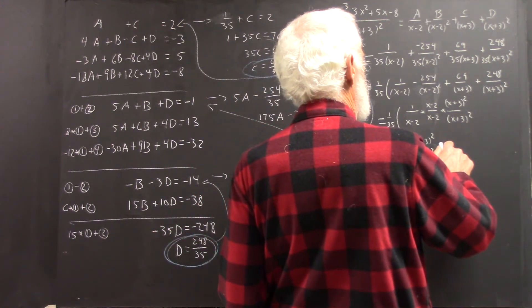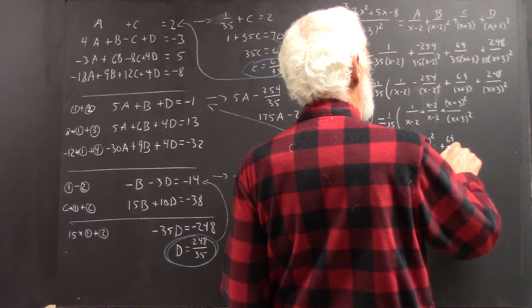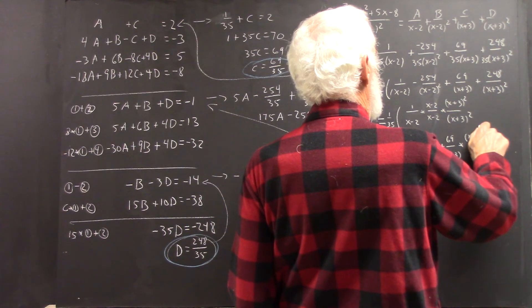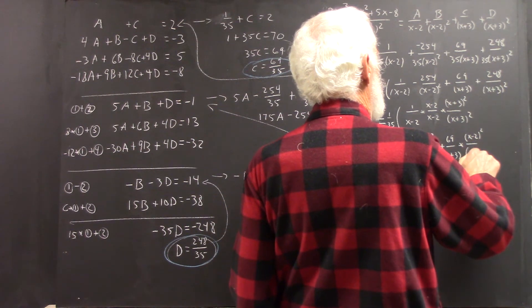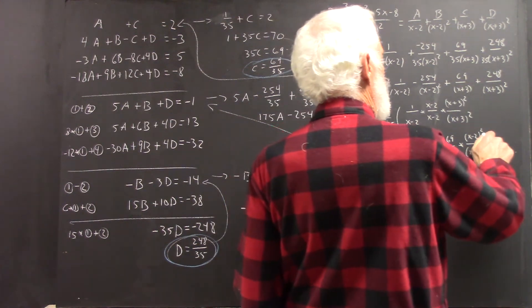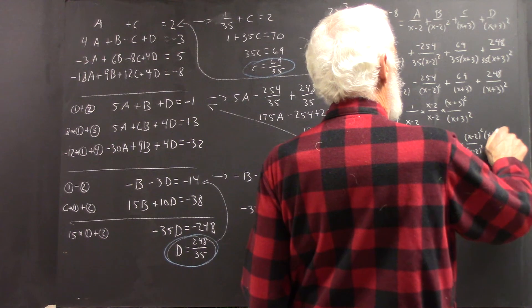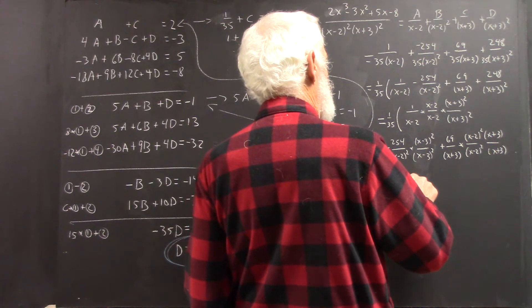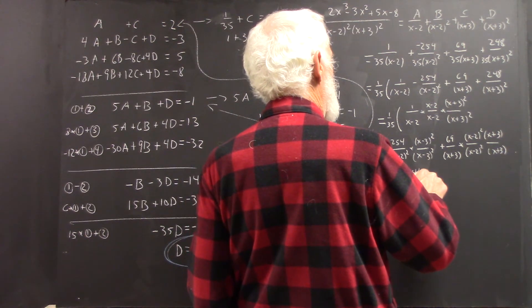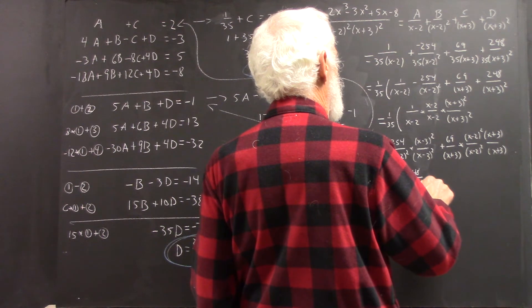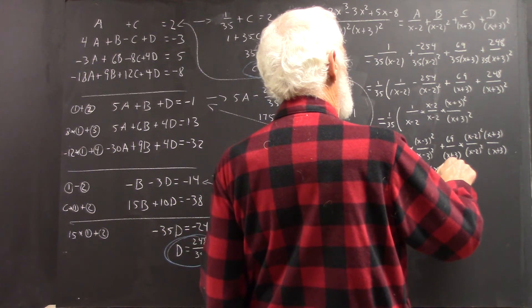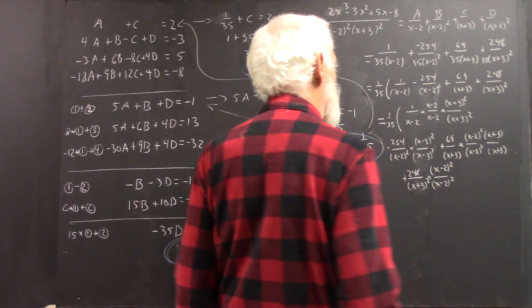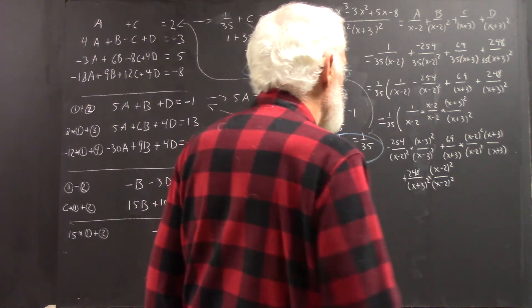And then I'm going to have to write out all the terms. So, now that's 1 over X minus 3 times X plus 3 squared multiplied by X minus 2 quantity squared over X minus 2 quantity squared. And parentheses.